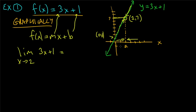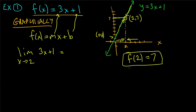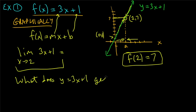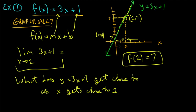Of course when x equals 2, y equals 7, but that's a separate question. The question is: what does y, that is 3x+1, get close to as x gets close to 2? We know y gets close to 7. That was confirmed both numerically and graphically.